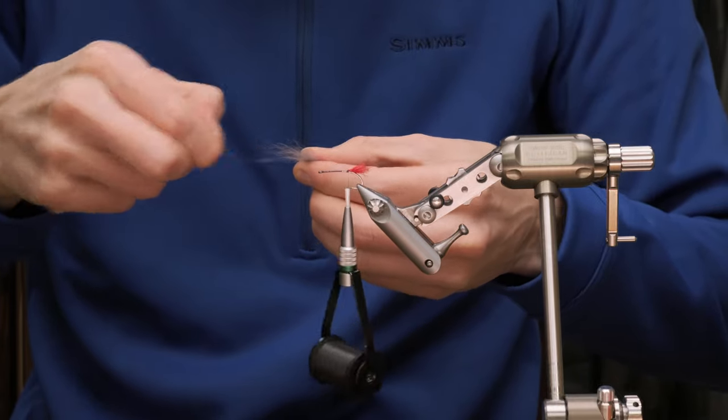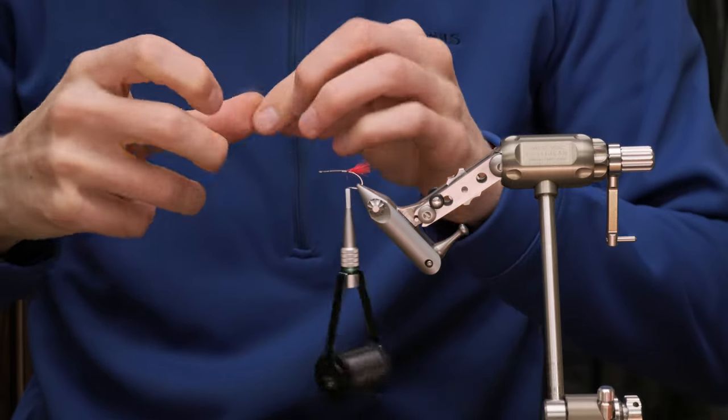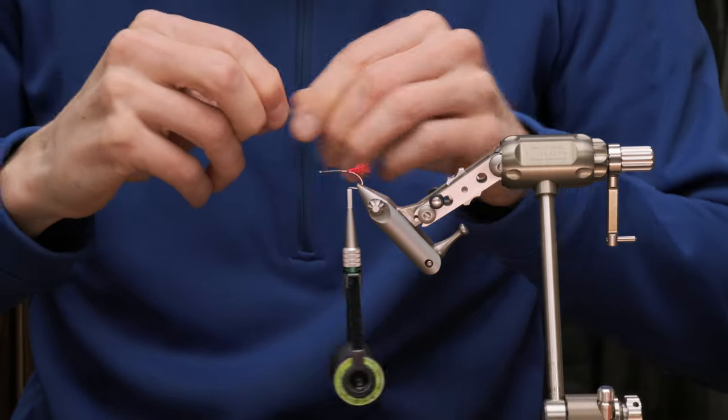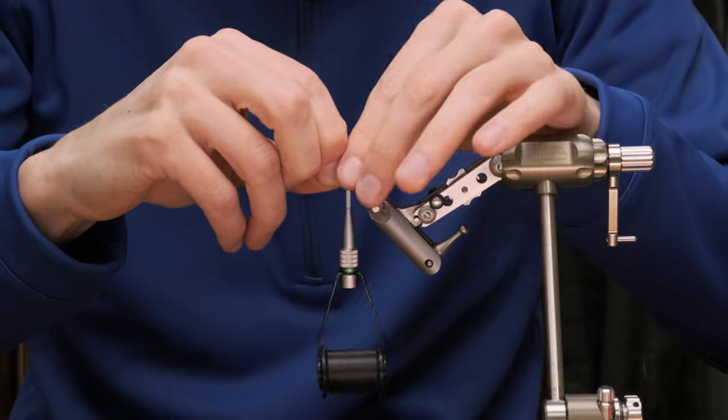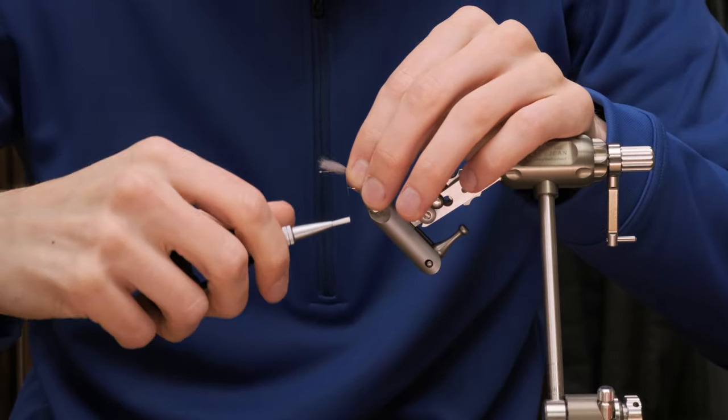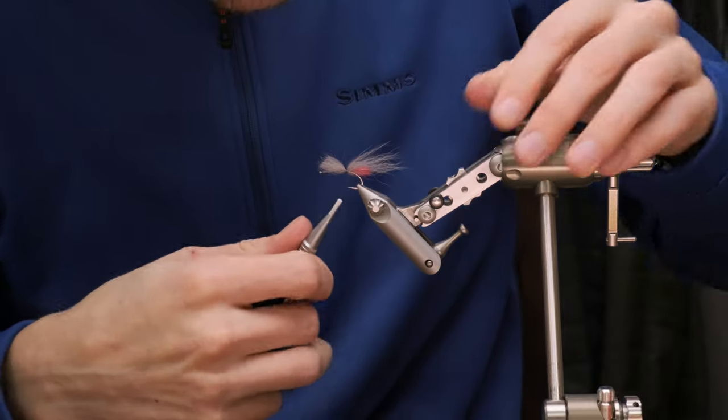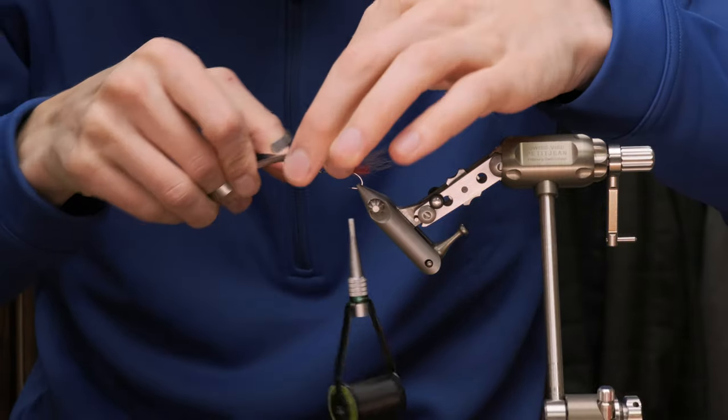The next step is to take some grey fox. Take away the under fur. Again tie it over the red tag. It's about two, two and a half times the length of the red little tag. Tie it in with some wraps and trim away the excess.